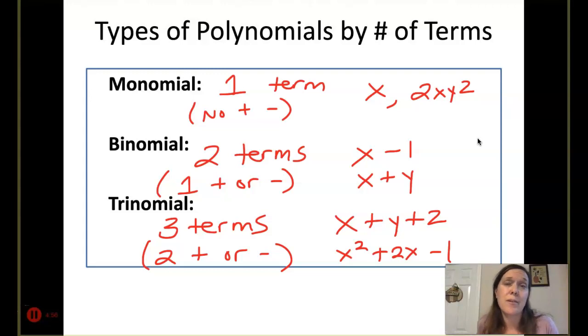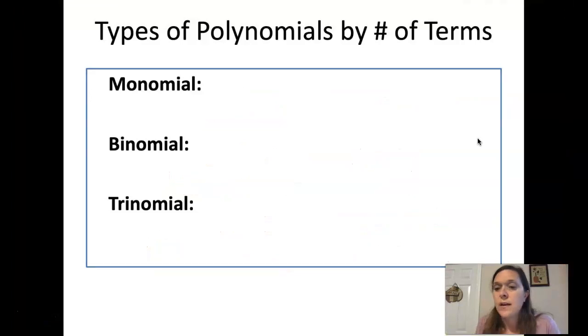Anything beyond that, we'll just call it a polynomial, because usually we don't do a lot of multiplying and dividing with something larger than a trinomial. We would say a polynomial of four terms or a polynomial of five terms.